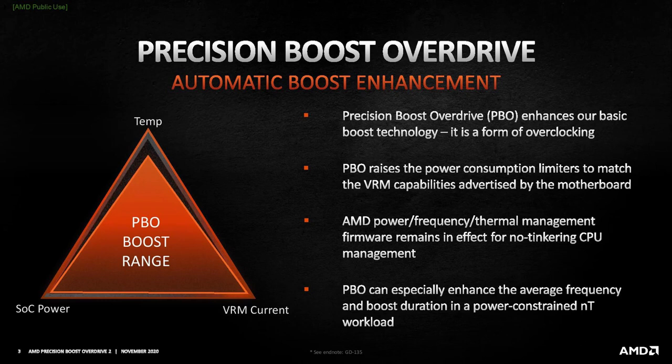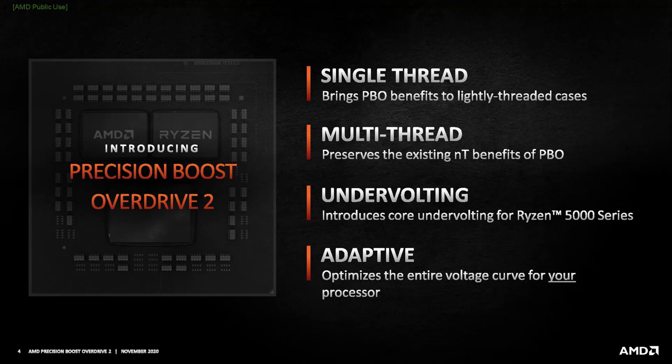Precision Boost Overdrive preserves all of the automated intelligence and boosts built into the Ryzen CPU, and AMD claims it provides the user with the best of both worlds. On one hand, it provides the ability to leverage superior cooling to achieve higher performance. On the other hand, the algorithm still aims to maximize performance in a wide variety of workloads. A major benefit of Precision Boost Overdrive is that it increases both the single-core and all-core maximum frequency.